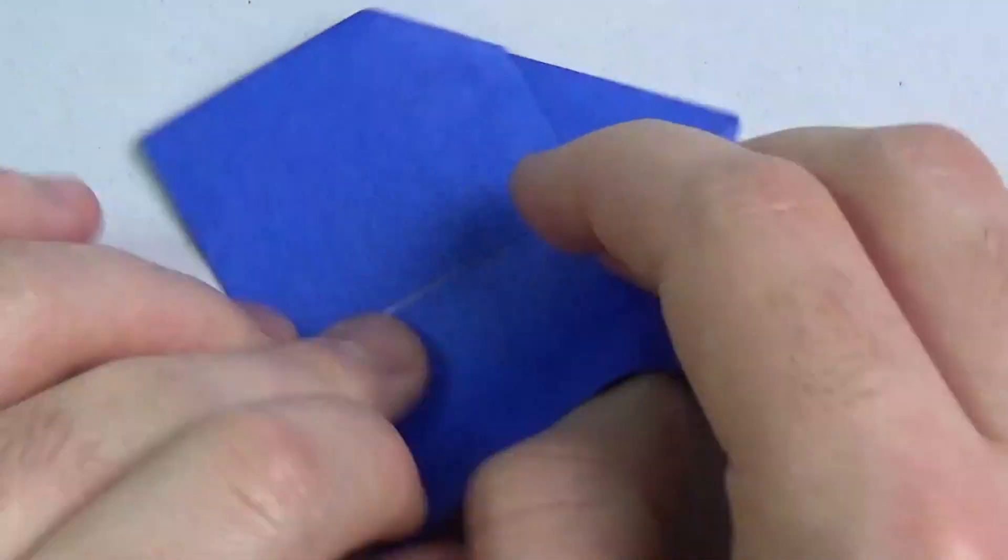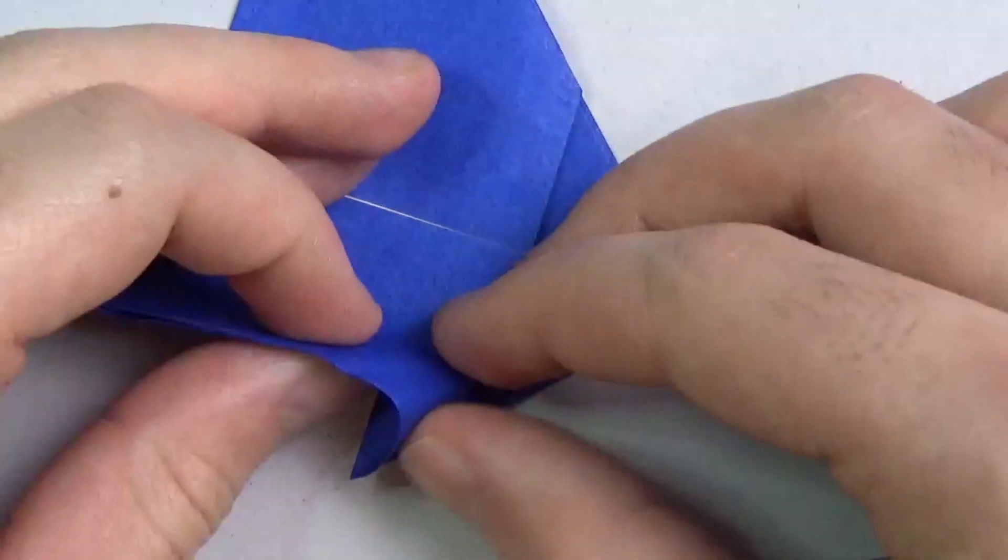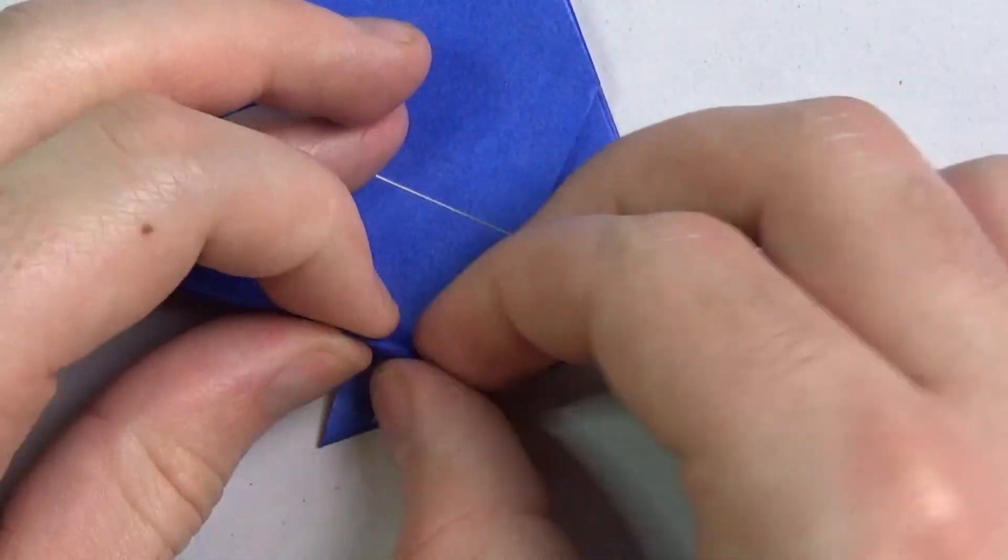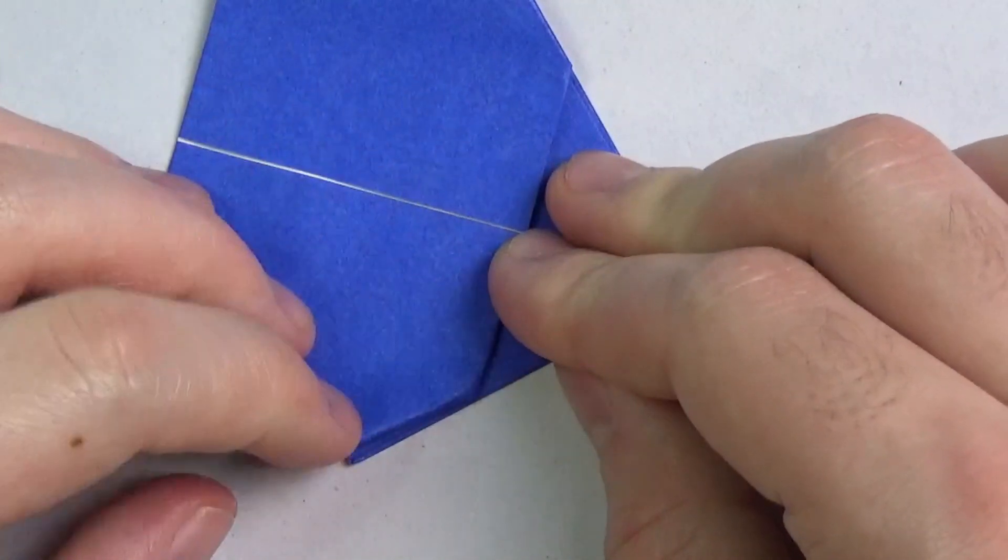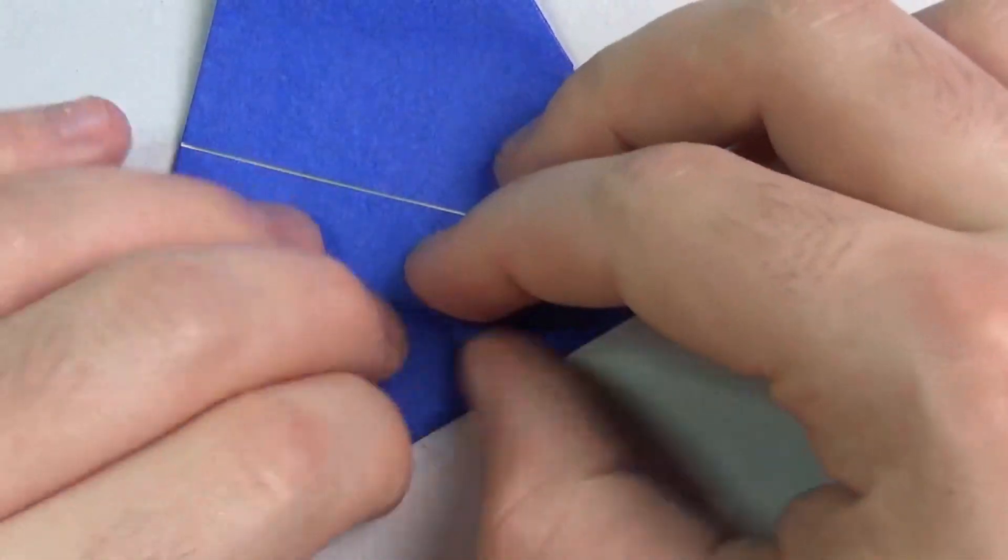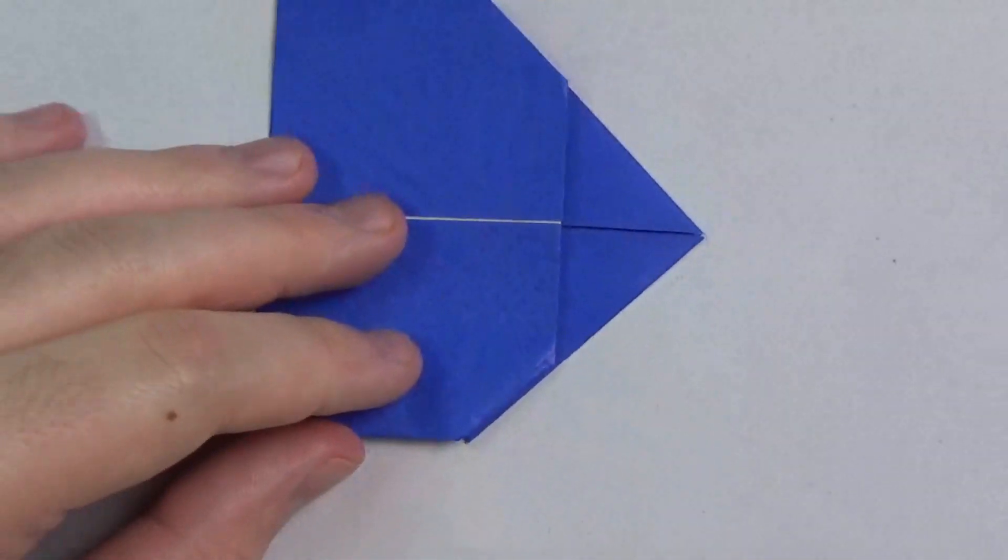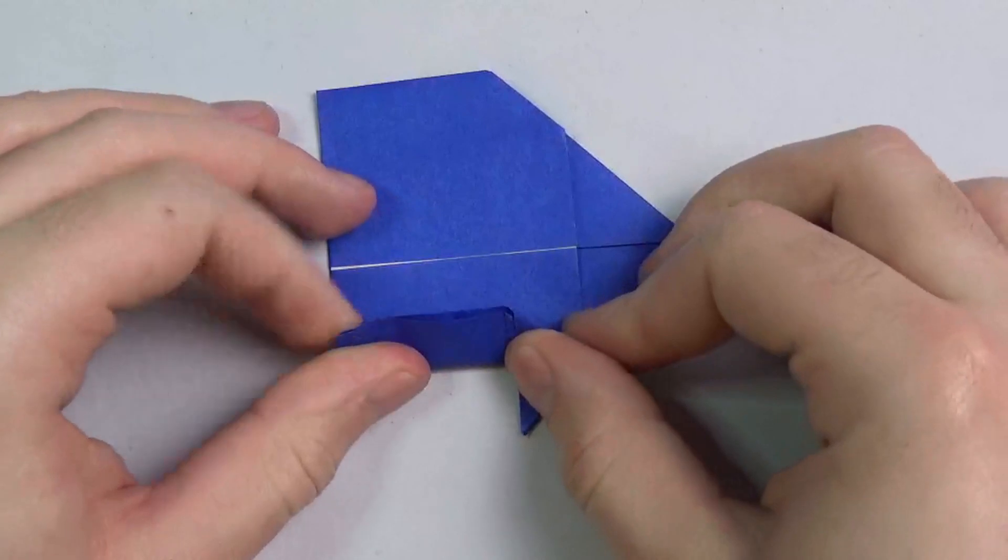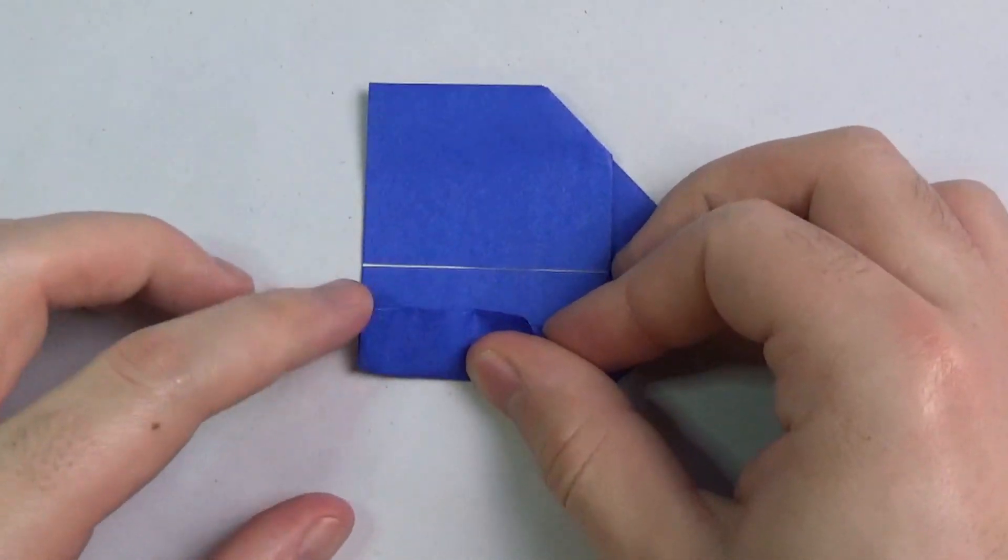And repeat on this side. Okay. And now take this and fold it up as far as it goes. And make sure the edges align right here.